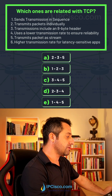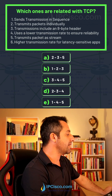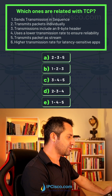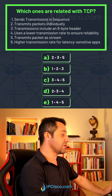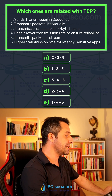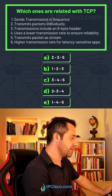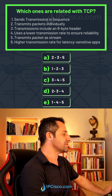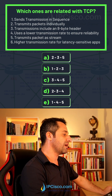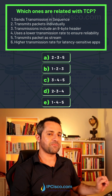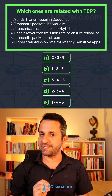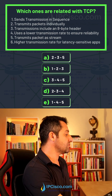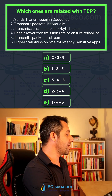Usually, transmission includes an 8-byte header, uses a lower transmission rate to ensure reliability, transmits packet as stream, higher transmission rate for latency sensitive applications. What do you think? Which ones are related with TCP? Let's go to choices one by one.